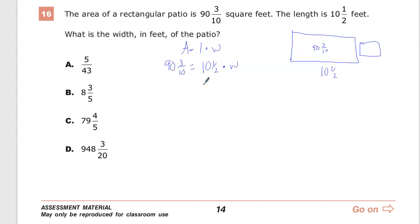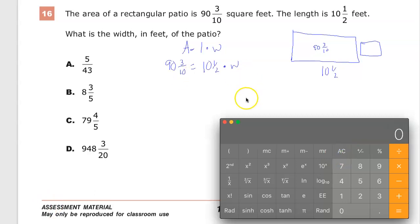First off, let's look at the legitimacy of the answer choices. I mean, this is a calculator section, right? We can use that to our advantage. So I have 90 and 3 tenths. I'll do 3 divided by 10, and that's what that is, 0.3, plus 90.